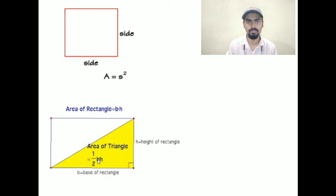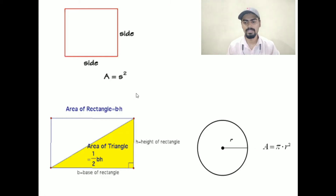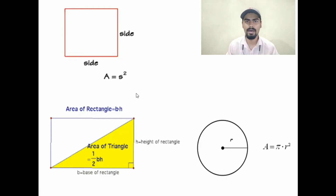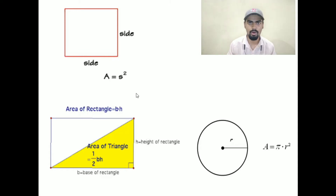If you study in the book, the area of a triangle is given as half into base into altitude. So again, for the regular surface, we have the formulas. The last one is a circle. For the circle also, we have a formula that is pi r squared. Where the value of pi, you can take as 3.14 or 22 by 7. So for regular surfaces, we have a formula.